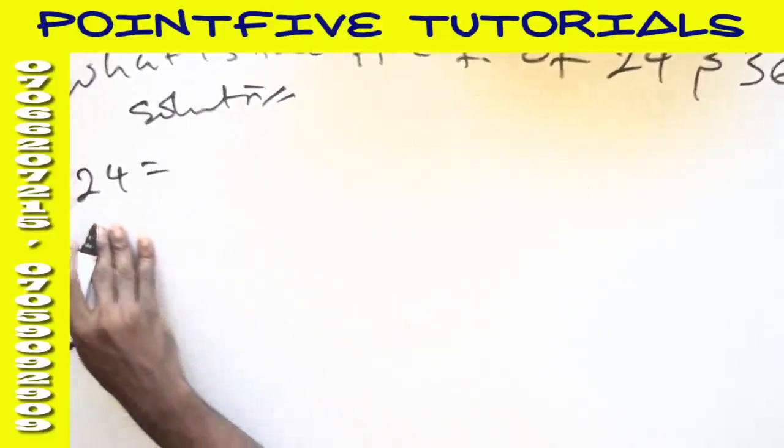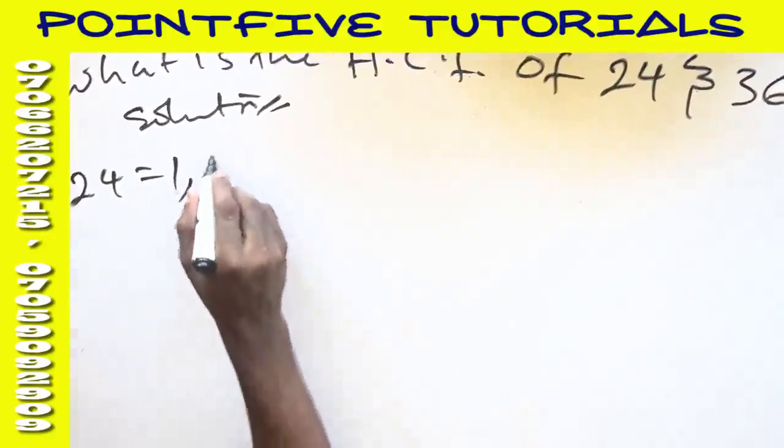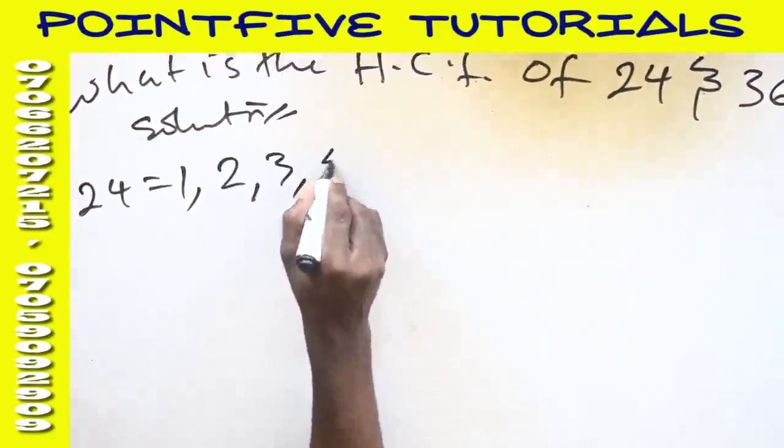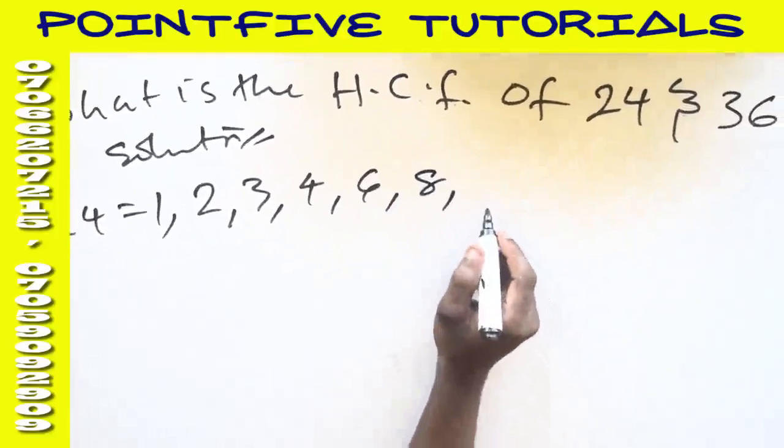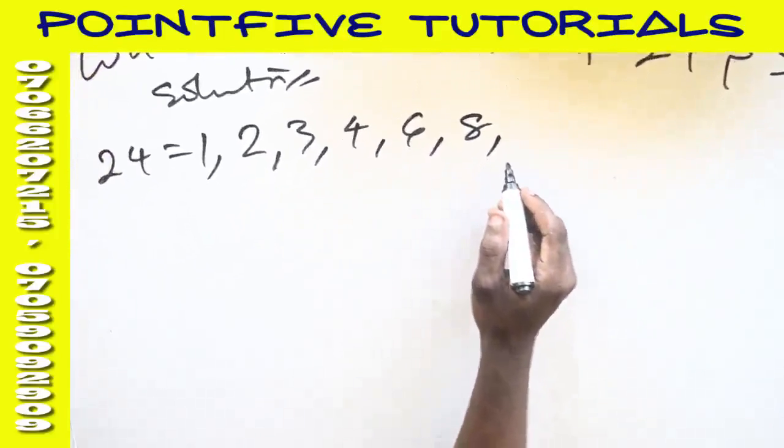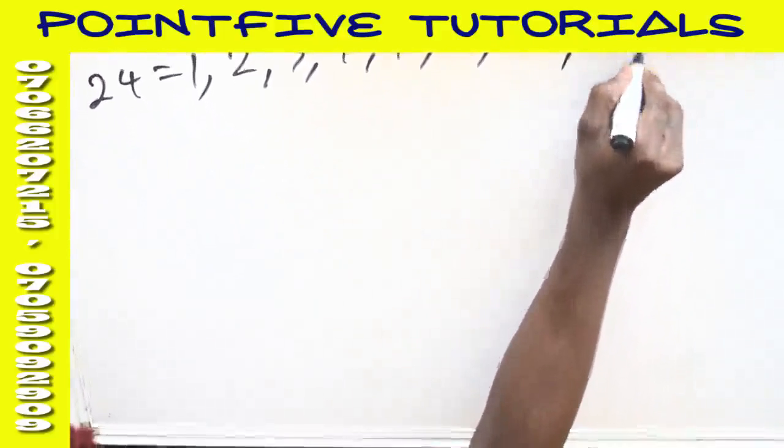Factors of 24 means the numbers that can divide 24 without remainder. Every factor starts from 1, 2 can go, 3 can go, 4 can go, 6 can go, 8 can go, and 12 can go, and 24 itself.